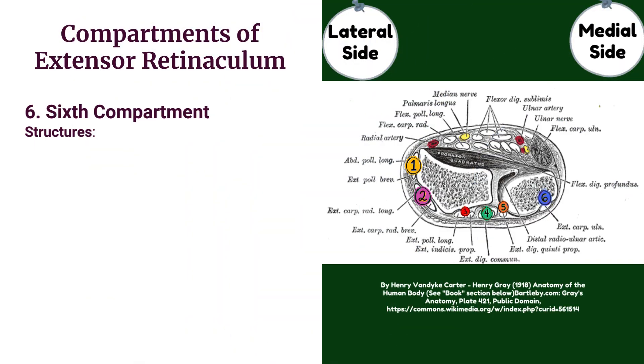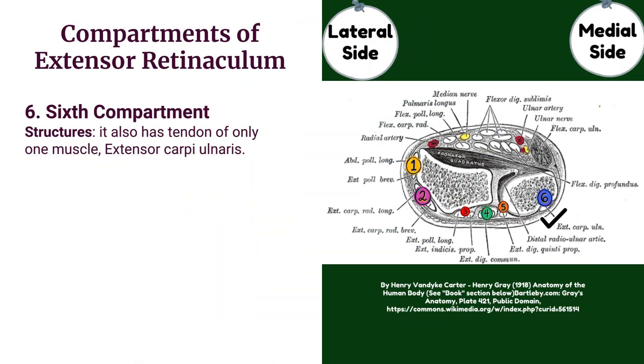The sixth compartment also contains the tendon of only one muscle: extensor carpi ulnaris.